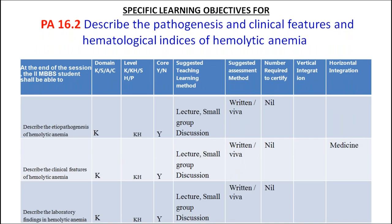Coming to the second competency — describe the pathogenesis, clinical features, and hematological indices of hemolytic anemias — the SLOs are: describe etiopathogenesis, describe clinical features, and describe laboratory findings in hemolytic anemias. A small group discussion facilitates this well, though time constraints may require a lecture. In practical sessions, small group discussion can help understand clinical features and laboratory findings better. Assessment method is written and viva, and medicine and pediatrics may help with vertical integration.